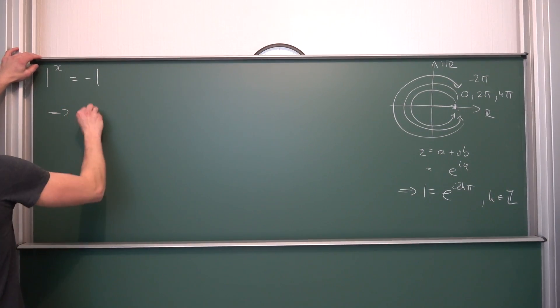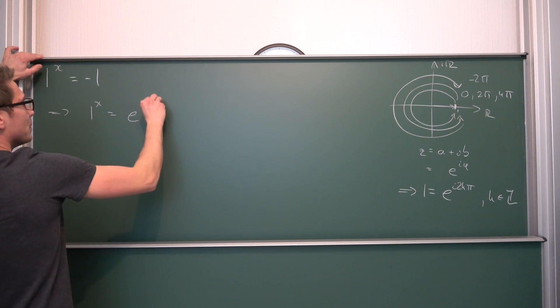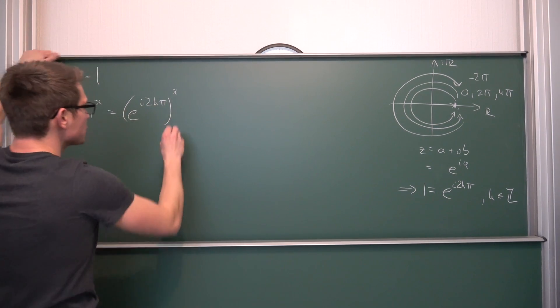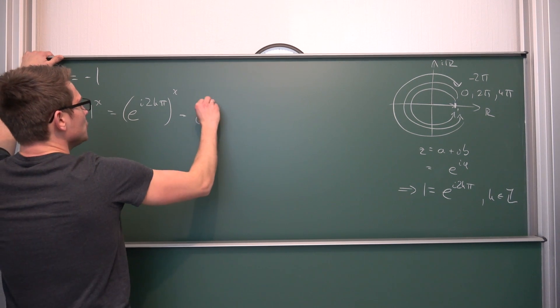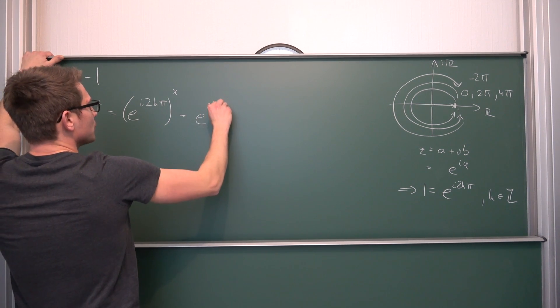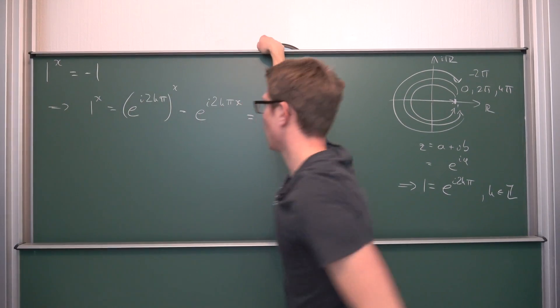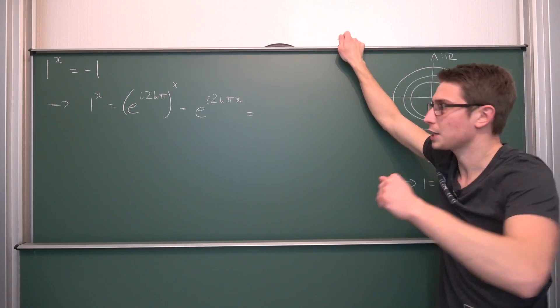Meaning, 1 to the x power is the same as e to the i*2kπ to the x power. Now, by using exponentiation rules, we can bring the x down here. Meaning, this is the same as e to the i*2kπ*x. Now, what about the number negative 1 on the other side? Can we do something about negative 1? Well, same logic applies here.